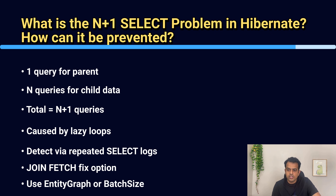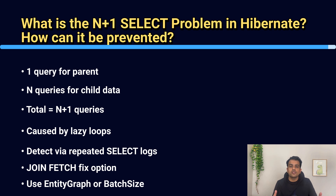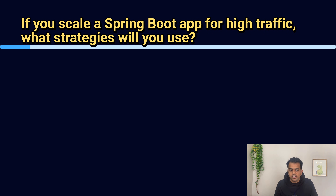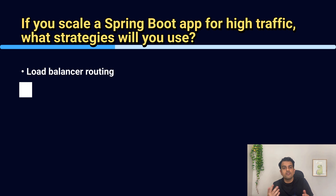The next question is: if you scale a Spring Boot application for high traffic, what strategies will you use? You can say that we deploy multiple instances using a load balancer and we enable caching. We add a circuit breaker for safety and use async processing for heavy tasks. You can also explain each point in detail — how you create multiple instances, how you use a load balancer, how you enable caching, how you use a circuit breaker, and how you use async processing.